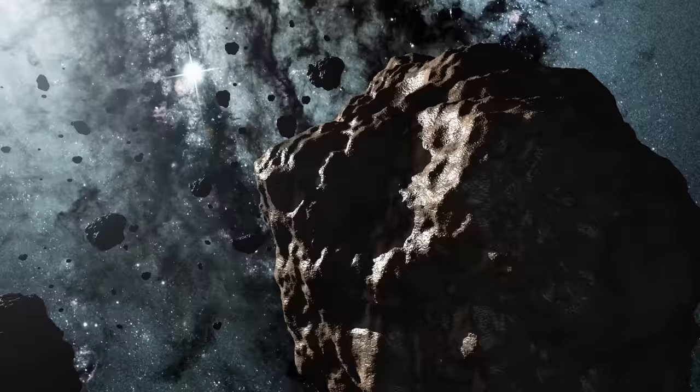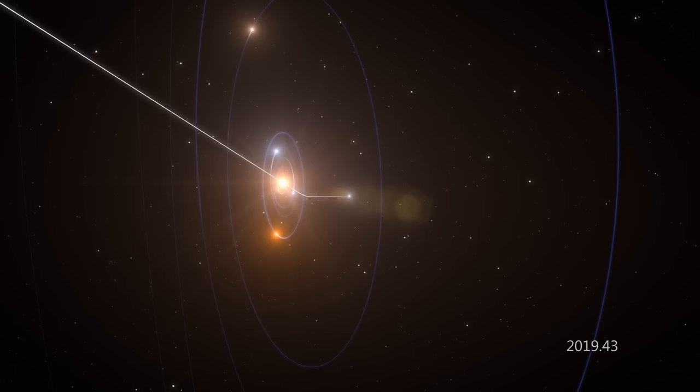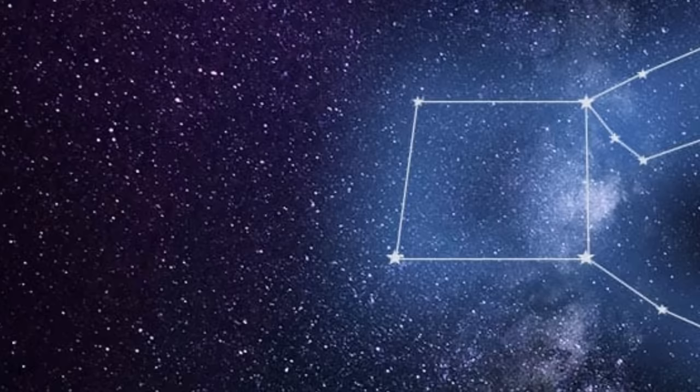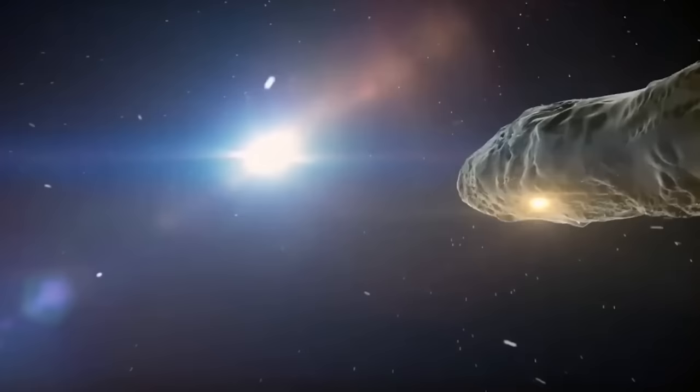Oumuamua passed Earth's orbit on October 14, 2017, coming remarkably close at about 15.04 million miles away. It continued its journey through our solar system, exiting towards the constellation of Pegasus in January 2019. As it distanced from Earth, it accelerated unexpectedly, vanishing from sight quicker than anticipated, with its fluctuating speed making it challenging to track.